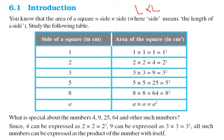So here you observe in this table that the side of the square if it is 1, the area would be 1 into 1, that is 1 square. If it is 2, it is 2 into 2. If it is a, it will be a into a, that is a square.